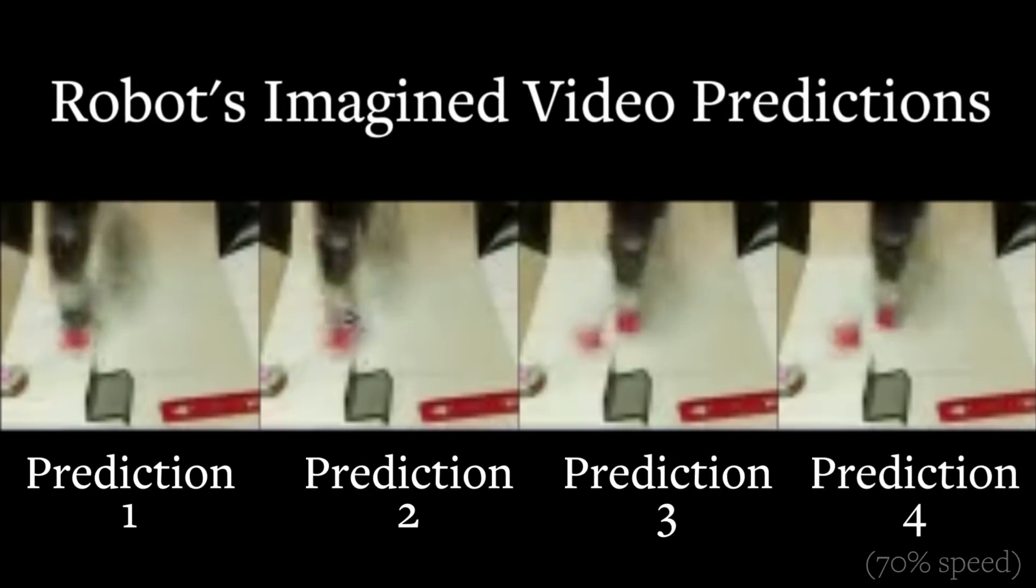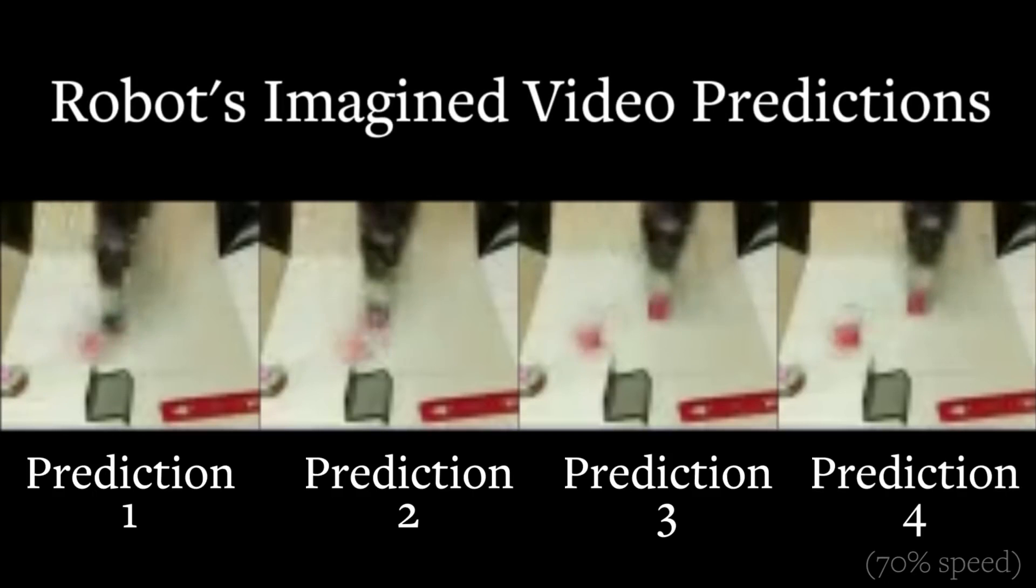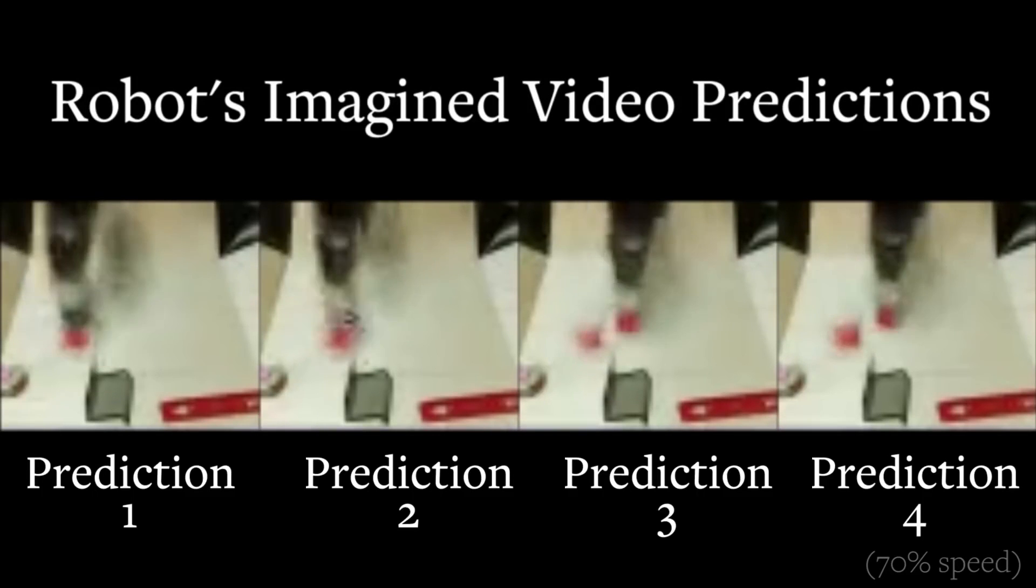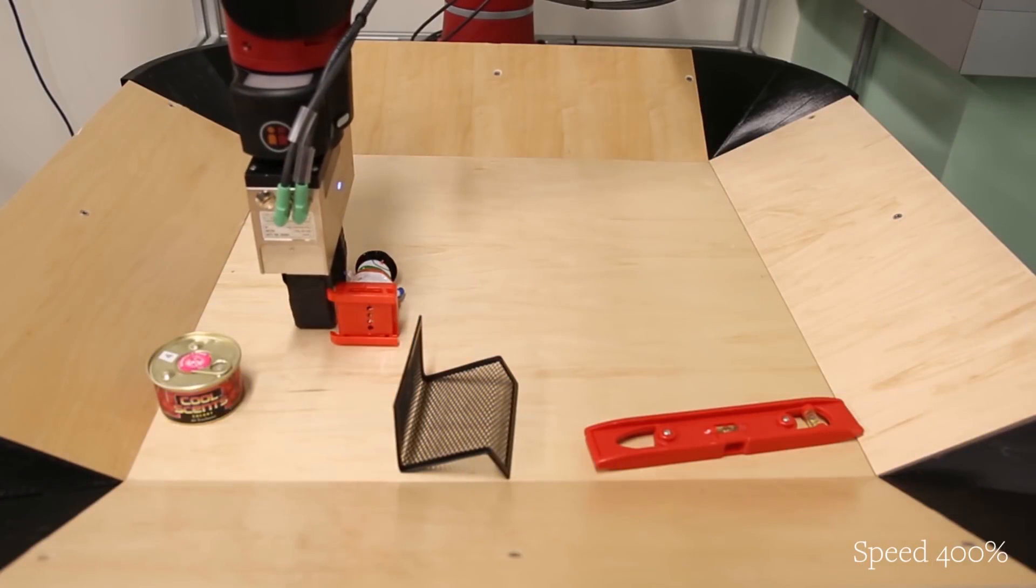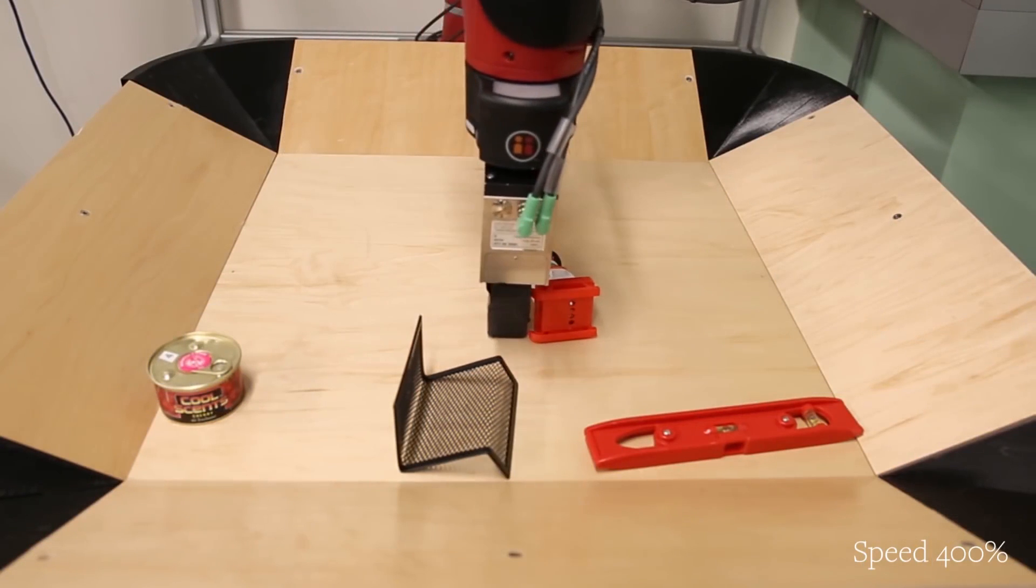It produces video scenes that haven't really happened yet, but that it thinks will happen if it pushes the object a certain way, and then carries out the one it decides will get the fastest results.